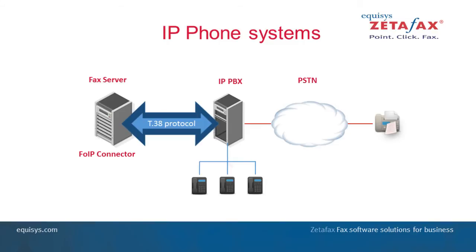The IP PBX then acts as a gateway, converting T38 to T30 protocol so that the fax can be transmitted over the PSTN. In an IP phone environment, two protocols are used: the fax over IP protocol T38 is used on the IP network, and the T30 protocol is then used to connect to remote fax machines. Because faxes are routed through the IP PBX, there's no need to maintain independent fax lines.